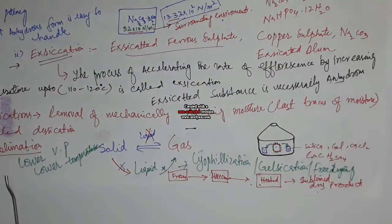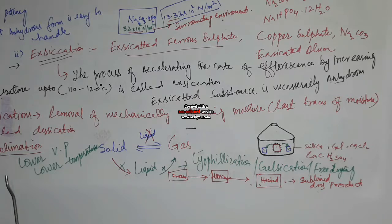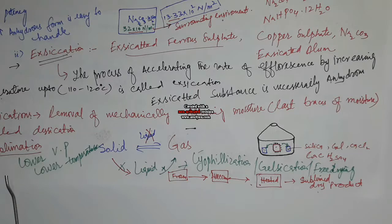In lyophilization or gel-desiccation, the substance is first frozen, then vacuum is created over it, and then it is heated at a low temperature. When heated under vacuum at low temperature, it is directly sublimed into a dry product. This process is called lyophilization, gel-desiccation, drying by sublimation, or freeze drying. Thanks for watching.